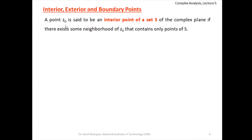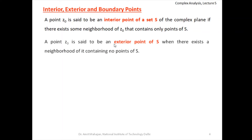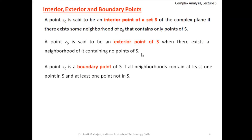Now, interior, exterior, and boundary points. A point z₀ is an interior point of a set S if there exists some neighborhood of z₀ that contains only points of S. A point z₀ is an exterior point of S if there exists a neighborhood of it containing no points of S — every point in that neighborhood lies outside S.